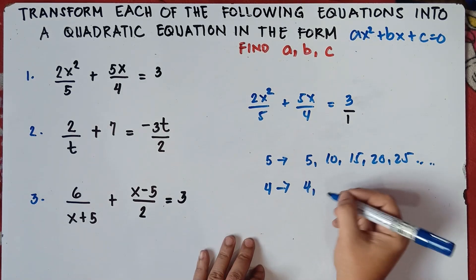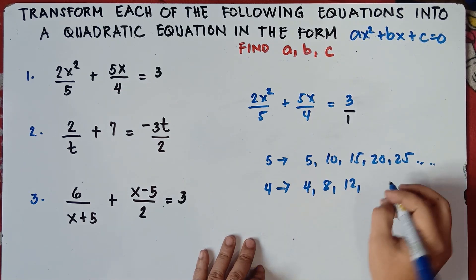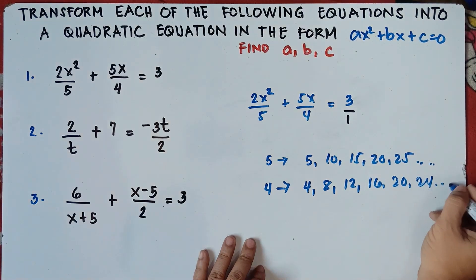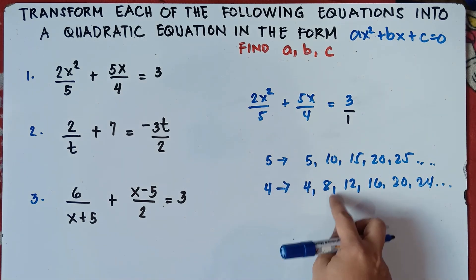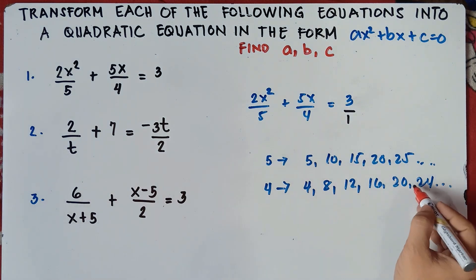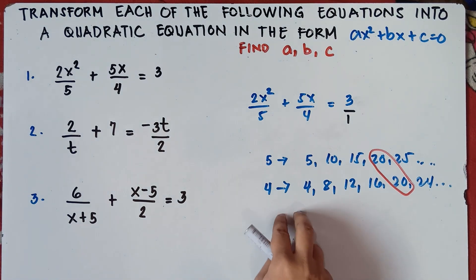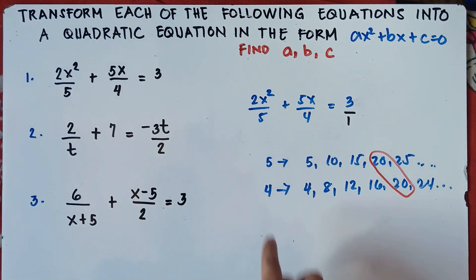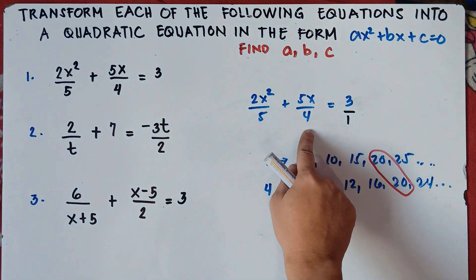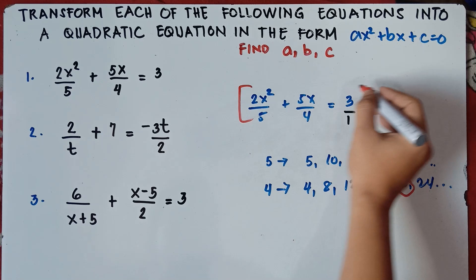The multiples of 4 are: 4, 8, 12, 16, 20, 24, and so on. The least number common to both 5 and 4 is 20. So the LCM of 5 and 4 is 20. Rather than listing multiples, you can simply think of the least number that you can divide by both 5 and 4, which is 20.